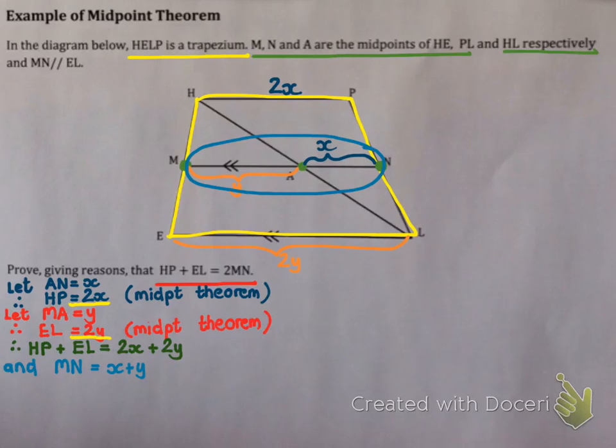And MN is equal to X plus Y. Now why does MN equal X plus Y? Well, MN is the combination of MA and AN, which is X plus Y. But this means that twice MN would simply be 2X plus 2Y since I'm multiplying by 2. And now I'm pretty much done because HP and EL must equal 2MN simply because I've proved that HP plus EL is 2X plus 2Y, and 2MN is 2X plus 2Y, which means I'm done.